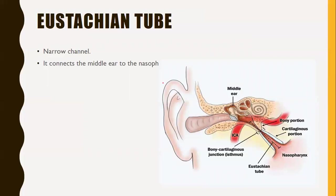Next is the eustachian tube. It is a narrow channel that connects the middle ear to the nasopharynx. In this picture, you can see the eustachian tube connecting the middle ear to the nasopharynx.